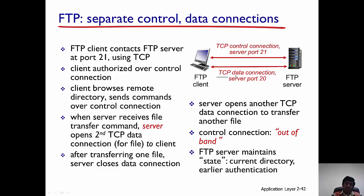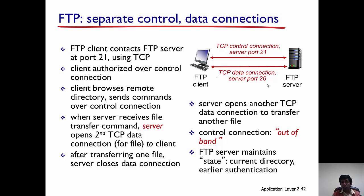Since control and data are being sent along different connections, they have been logically separated — there is a separate port for sending control information and a separate port for sending data packets. FTP is called out-of-band because of this separation between control and data. In HTTP, both control and data are sent on port 80, so HTTP is in-band while FTP is out-of-band.